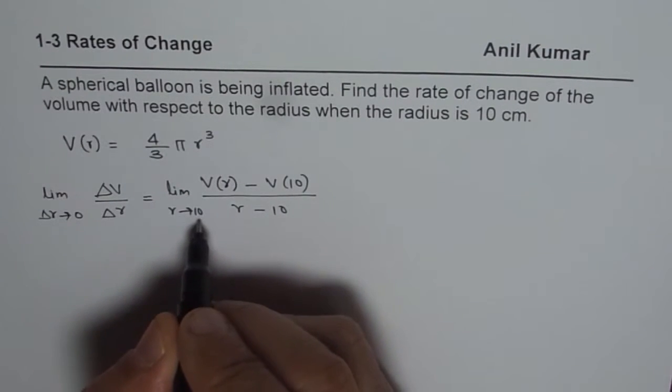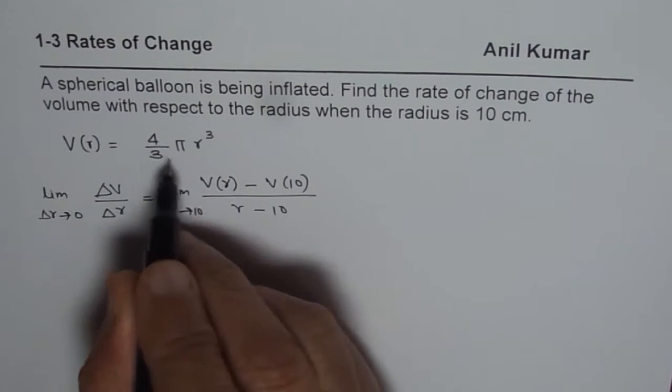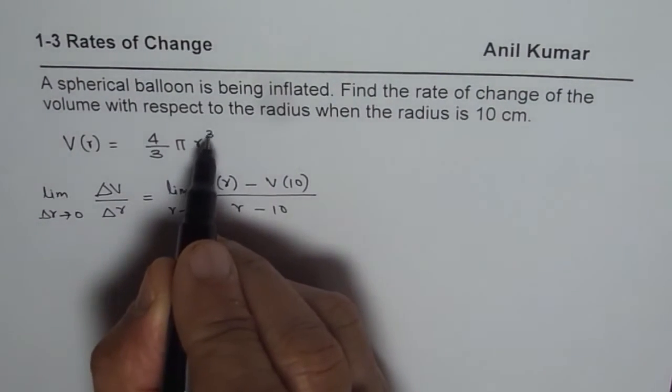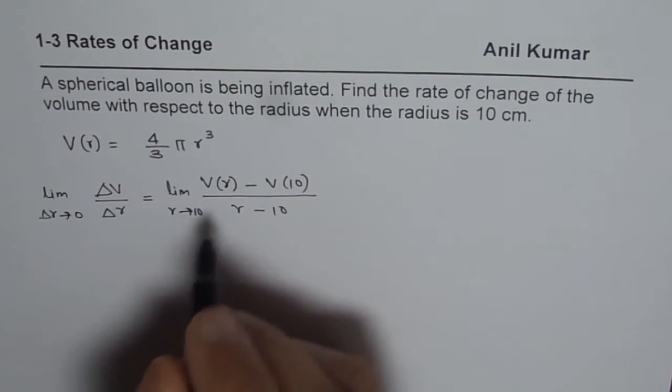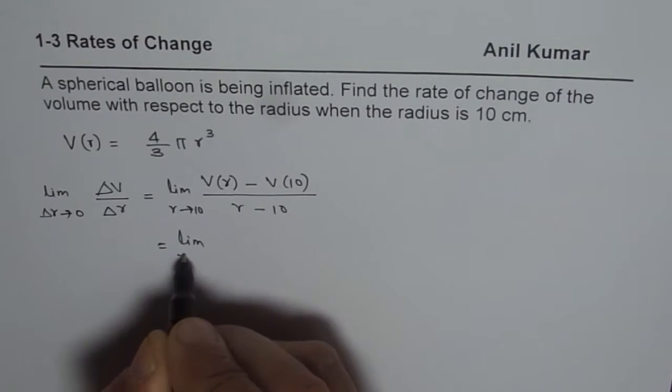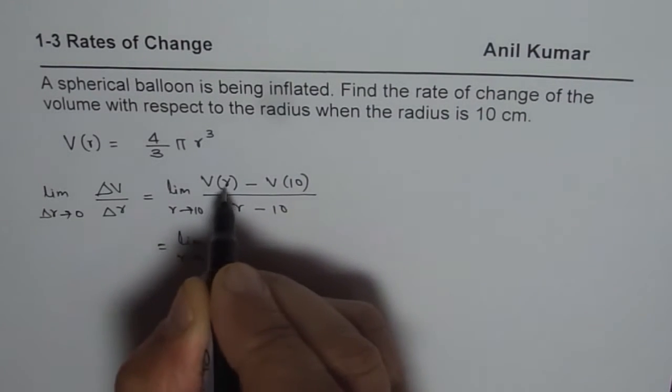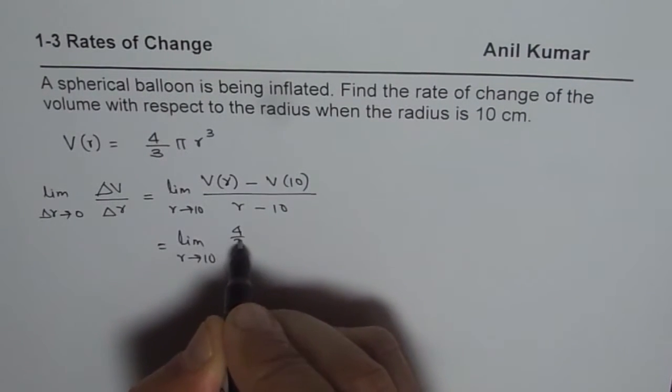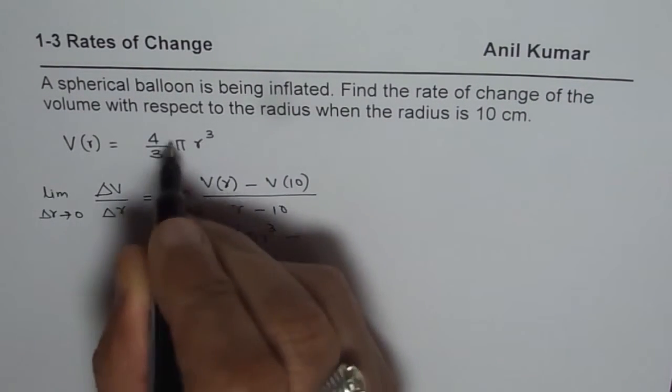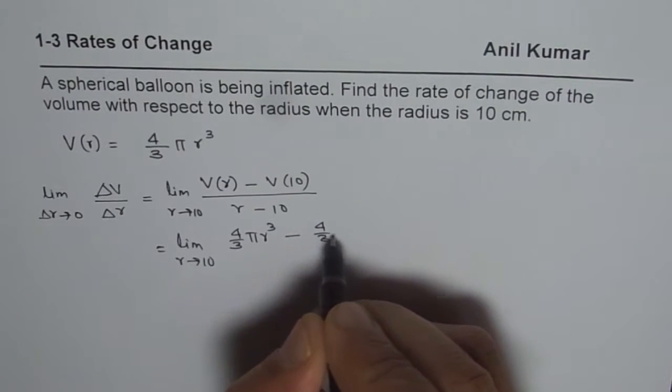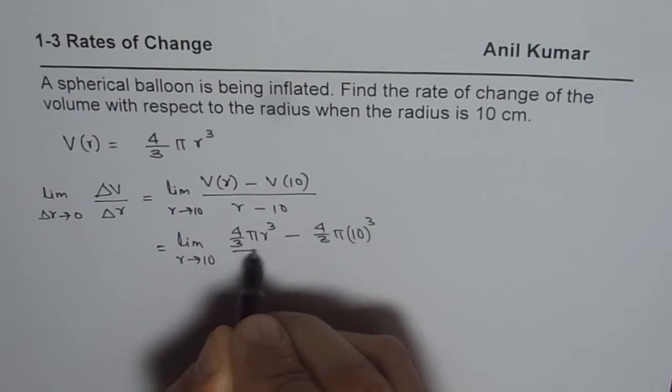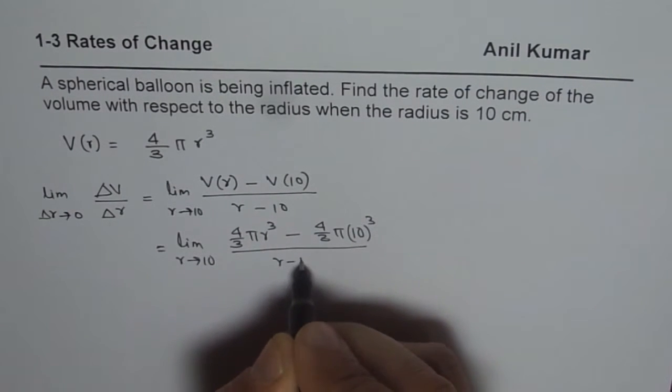So let us substitute 10 in the volume. So v of 10 will be, r will be 10 here. The formula is 4 by 3 pi r cube. So we get limit r approaches 10, volume is 4 by 3 pi r cube minus volume at 10 will be 4 by 3 pi 10 cube, divided by r minus 10.